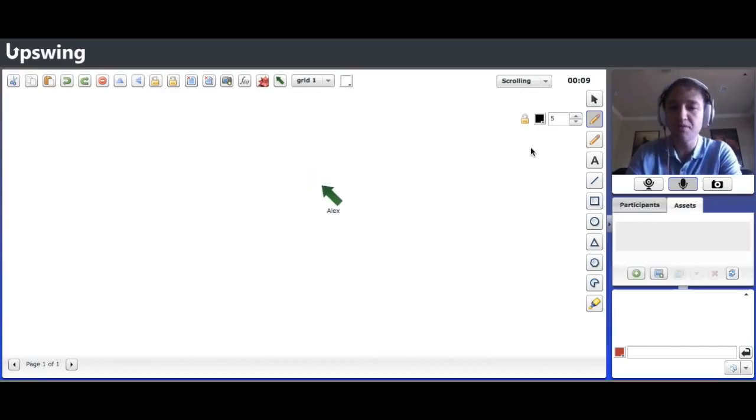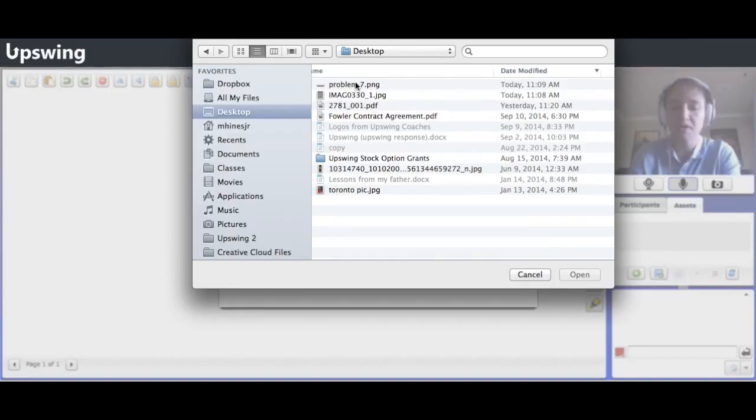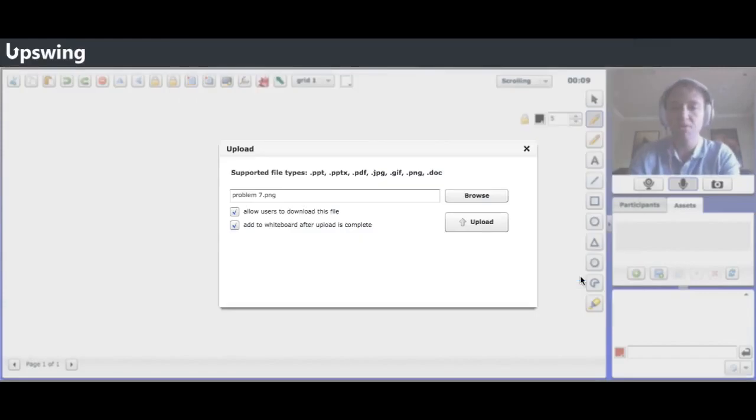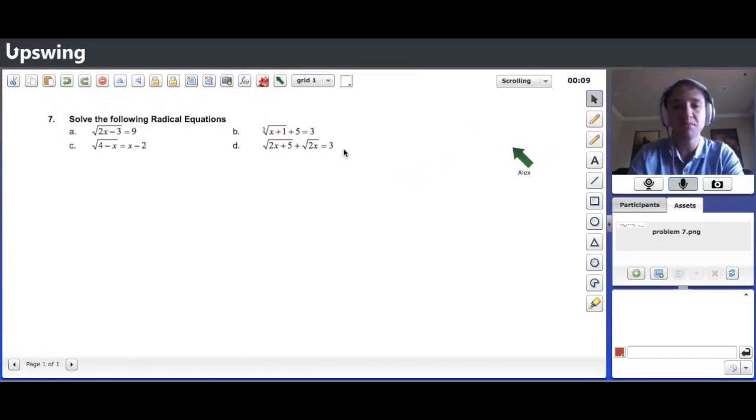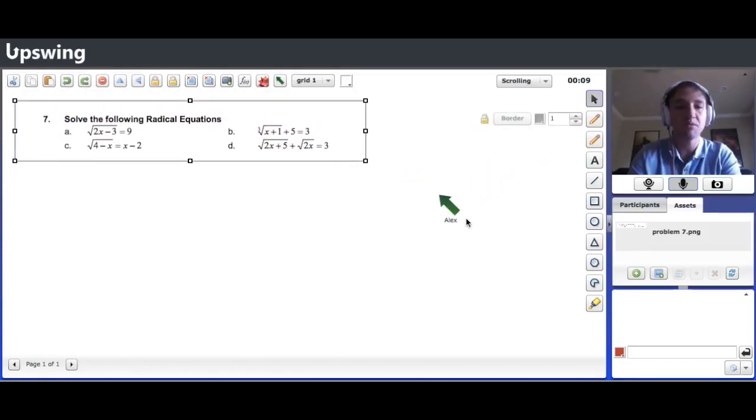Basically, what you can do is if you have a problem set or anything you've been working on, you can use the assets tab over here right beneath the video to go ahead and upload any documents, PDF, Word documents, just send them to there. It'll also give you the opportunity to load that document onto the whiteboard if you'd like so that we can write on it and both look at it in real time. If you don't have the document, you can always use the equation editor or the pencil to upload it or we can just talk through some of the problems. Oh, great. Okay, so it looks like you have an electronic version of it.